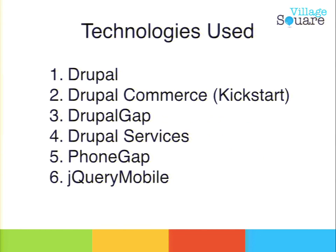Before we get into how you build the mobile app using the technologies we've built, we'll give you a quick overview of some of the technologies we're using. Obviously Drupal is there with all the modules we love — entities, views, rules. Drupal Commerce leverages all of them in very interesting ways; we use rules for pricing and all sorts of stuff in between.